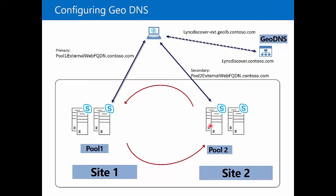So in the event that Pool 1 goes down, the GeoDNS system can realize that Pool 1 is no longer available. And in that instance, users of Pool 1, when they query for linkdiscover.contoso.com, they can actually be transparently redirected to Pool 2, ensuring that their services continue to operate as we would expect in a disaster.